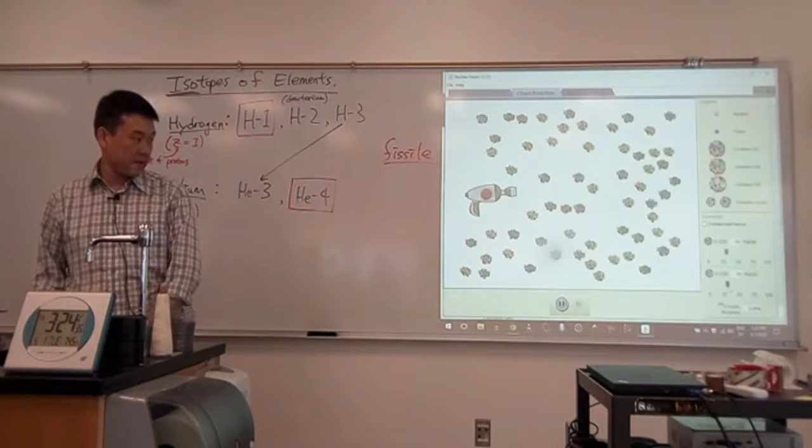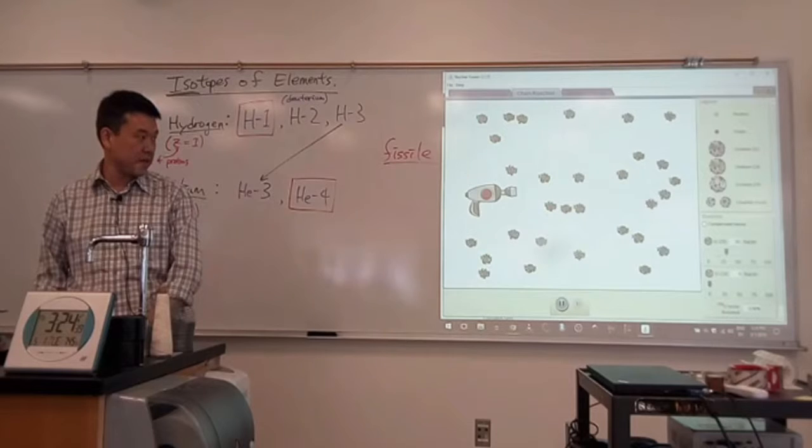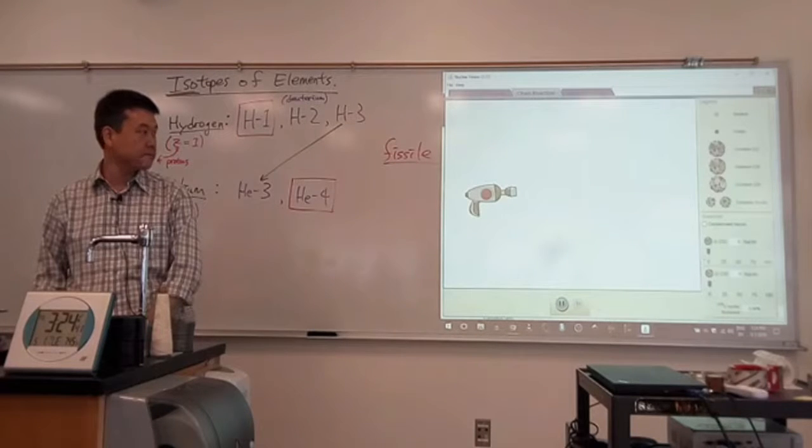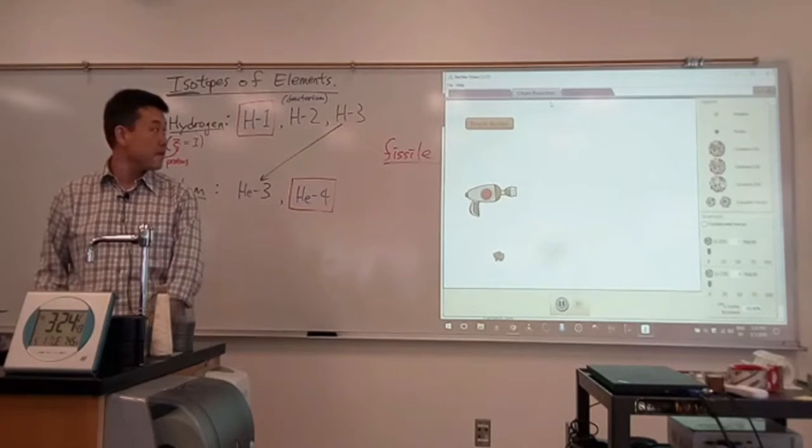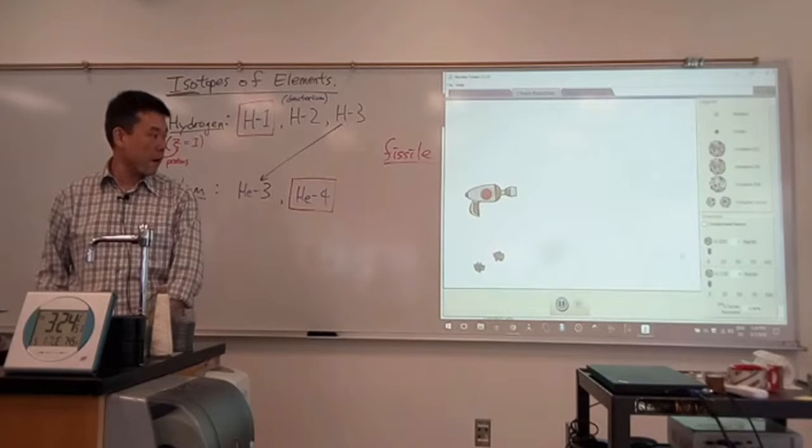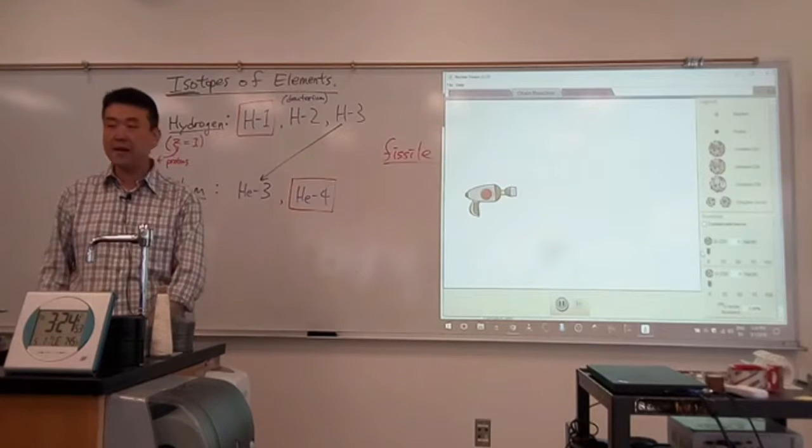And the second idea that I can demonstrate with this simulation is the idea of critical mass. So, like, when you have one uranium-235, that's kind of simple. What would happen? It splits, and that's it. Now, what do you think would happen if I have, I don't know, 10 uranium-235 nucleus, and I fire one neutron into it?